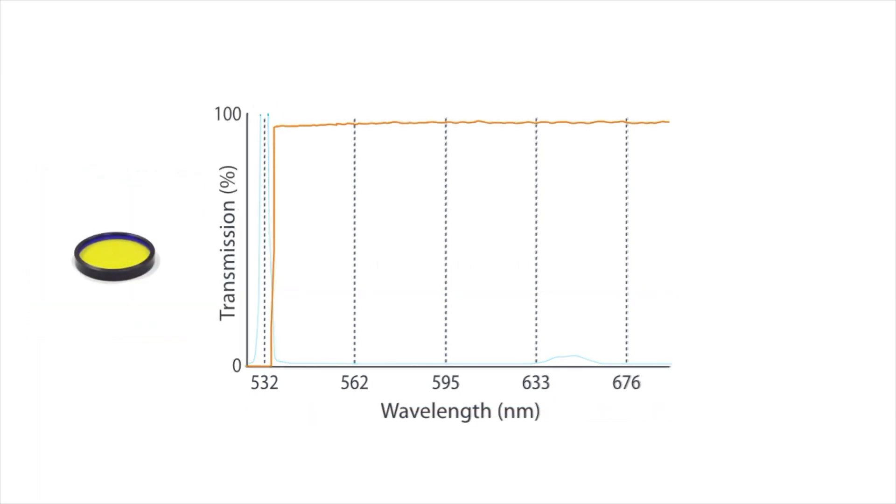Next, by using the filter, Rayleigh scattered light at 532 nanometers is blocked. Now the Raman scattered light emitted at a longer wavelength is visible.